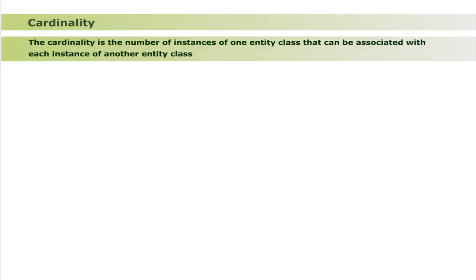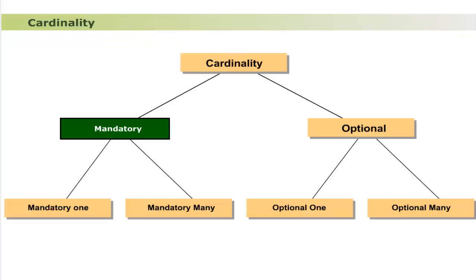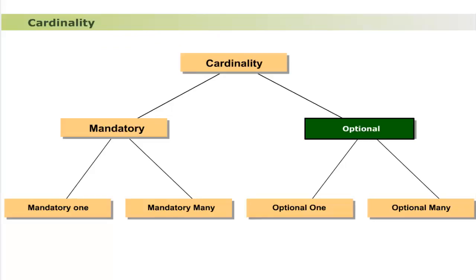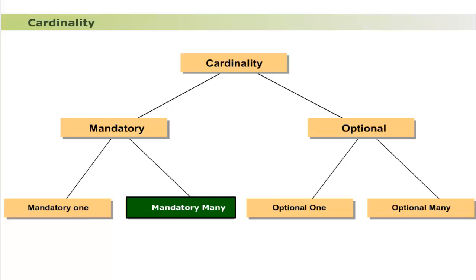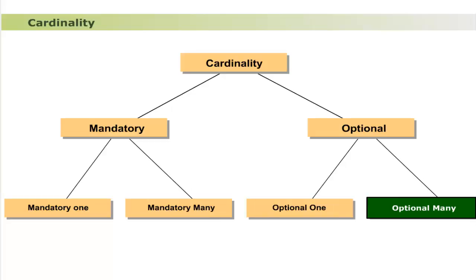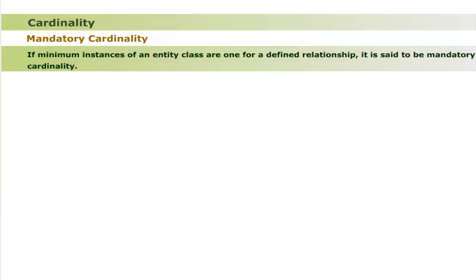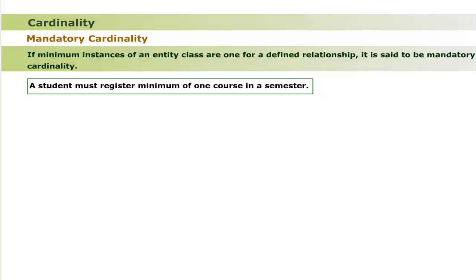Cardinality is the number of instances of one entity class that could be associated with each instance of another entity class. Cardinality types include mandatory cardinality and optional cardinality. Mandatory cardinality is further divided into mandatory one and mandatory many; optional cardinality is divided into optional one and optional many. Mandatory cardinality means the minimum instances of an entity class are one for a defined relationship. For example, a student must register a minimum of one course in a semester.